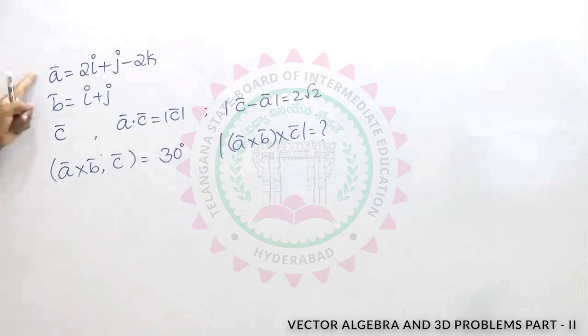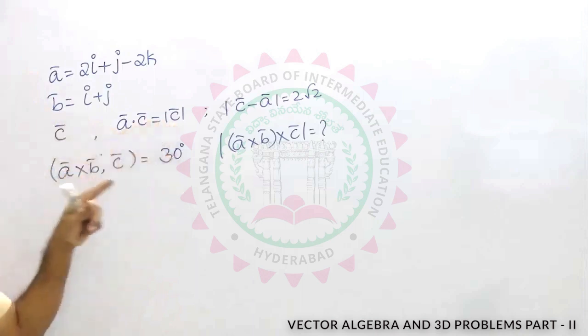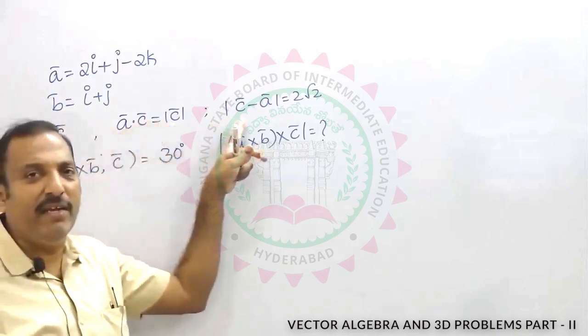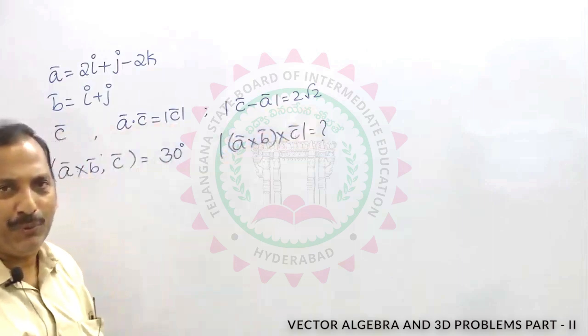a bar is given, b bar is given and given that a dot c is equal to mod c and one more relation is given, modulus of c minus a is equal to 2 root 2.